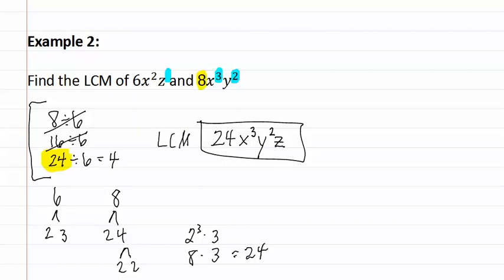This means that our least common multiple is twenty-four x cubed y squared z.